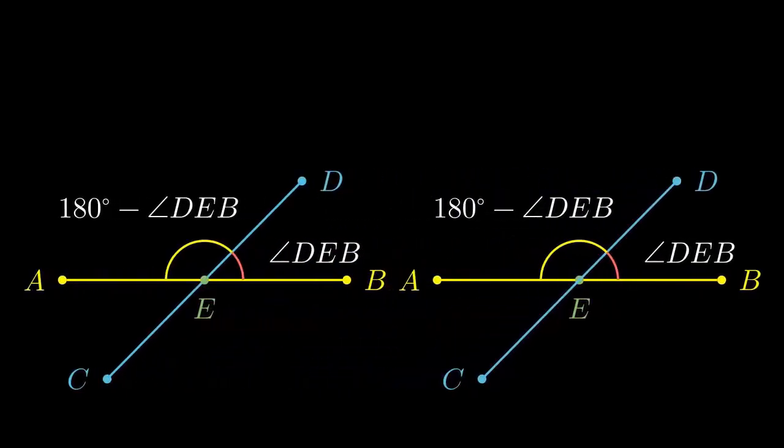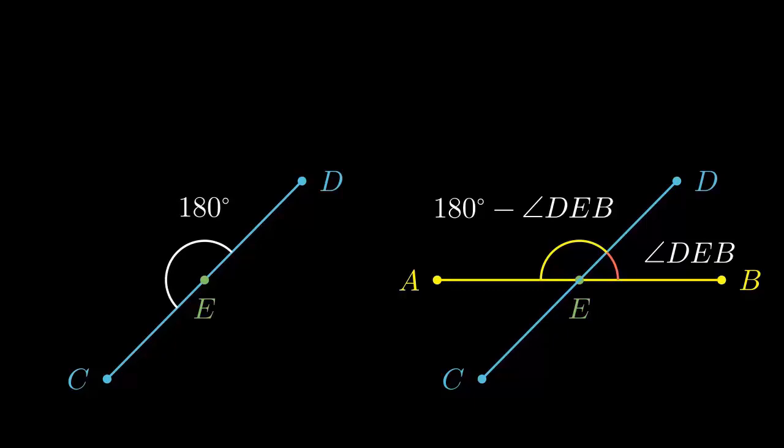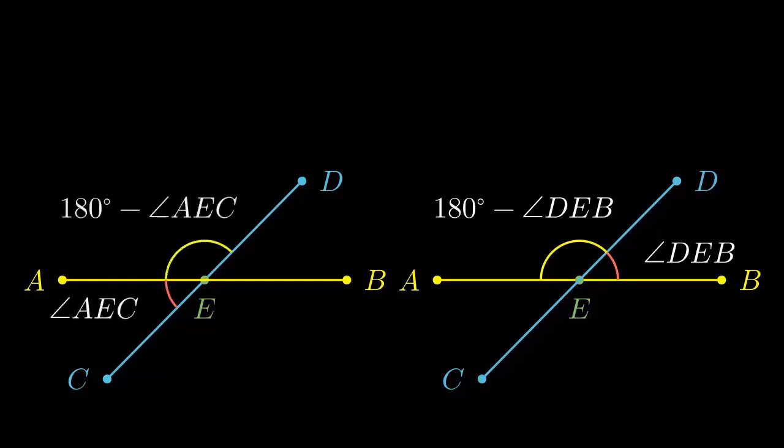Let's copy this figure. For the left side, notice the segment CD. The measure of the angle CED is 180 degrees, since CD is a line segment. Let's put back the segment AB again. The measure of the angle AED is 180 minus the measure of the angle AEC.